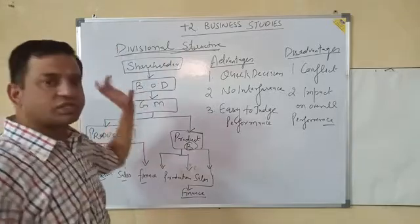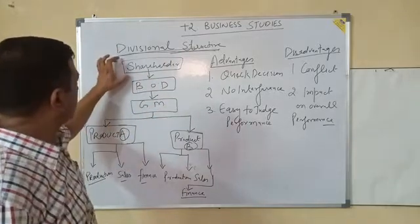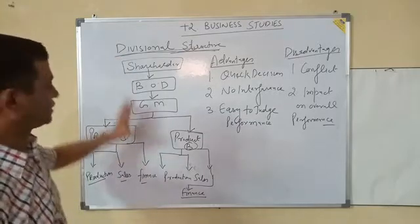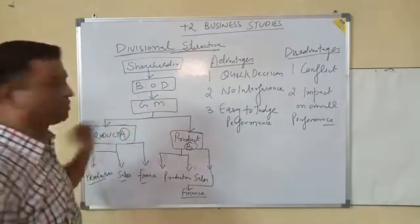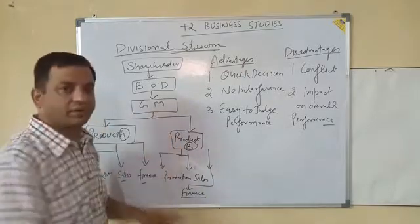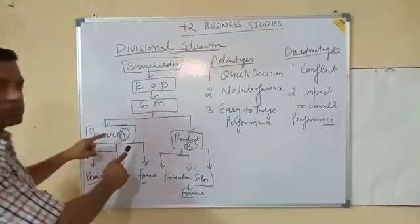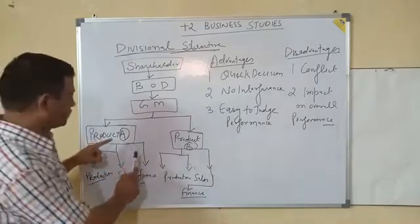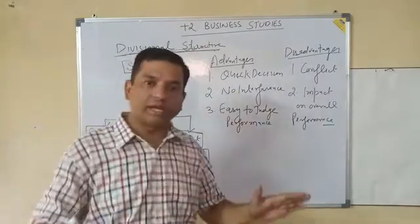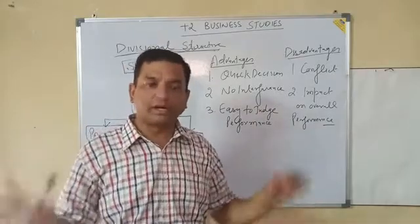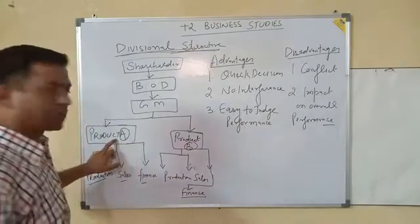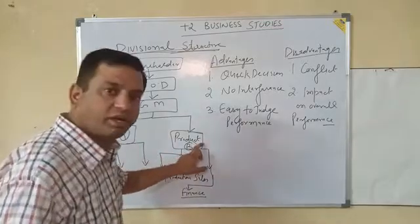What type of structure is this? At the top level there will be shareholders, then board of directors, then general manager. After general manager, it is a little bit different. Suppose a company is dealing in two types of products — Product A and Product B. These two products will be made into separate, individual, independent departments: one is Product A department and one is Product B department.